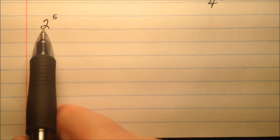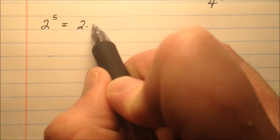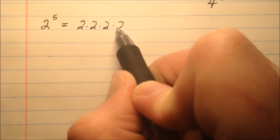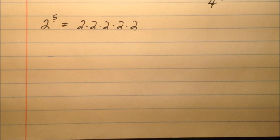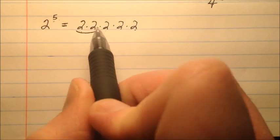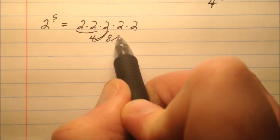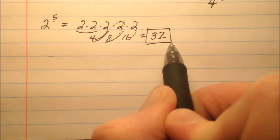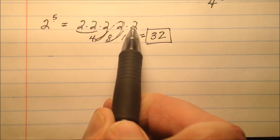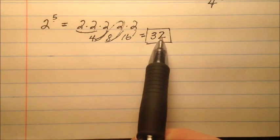Now let's do some examples where we actually find the value of a term. If we have two to the power of five, we can rewrite this in expanded form as two times two times two times two times two, because two is the number multiplying by itself and we're doing it five times. Two times two is four, four times two is eight, eight times two is 16, and 16 times two is 32. So two to the power of five equals 32.